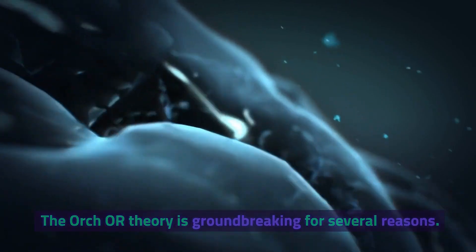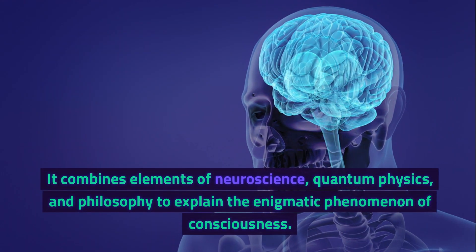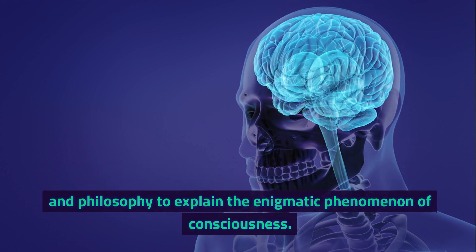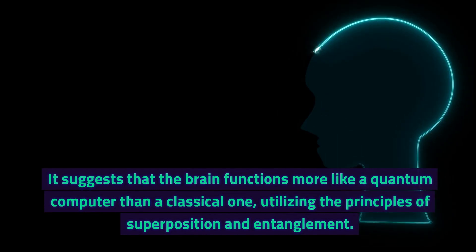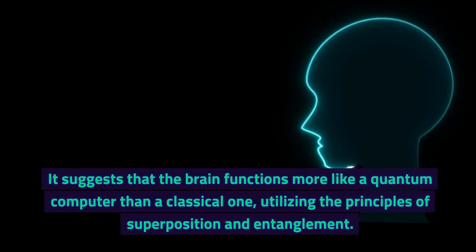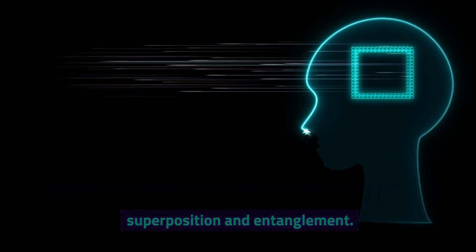The ORCH-OR theory is groundbreaking for several reasons. It combines elements of neuroscience, quantum physics, and philosophy to explain the enigmatic phenomenon of consciousness. It suggests that the brain functions more like a quantum computer than a classical one, utilizing the principles of superposition and entanglement.